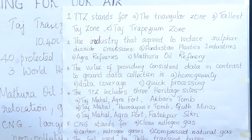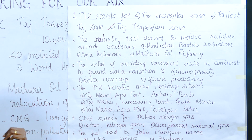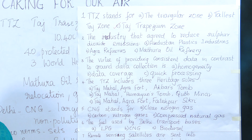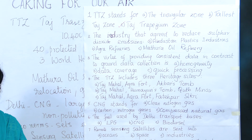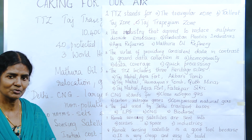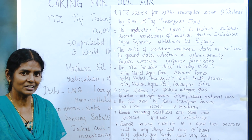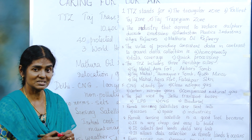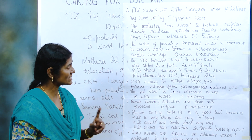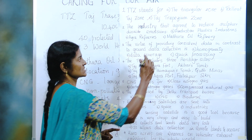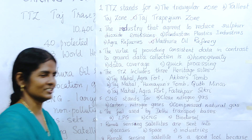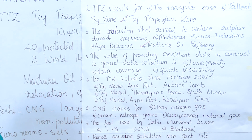The industry that agreed to reduce emissions: we discussed the Mathura oil refinery, which gave out so much sulfur dioxide but very beautifully agreed to bring down those sulfur dioxide emissions. So the answer is the Mathura oil refinery — you should not forget that.